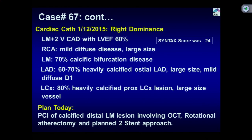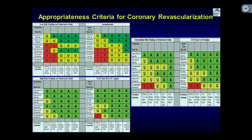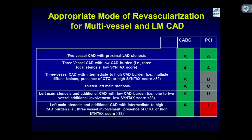We will use OCT, rotational atherectomy, and a planned 2-stent approach. With a syntax score of 24, it is reasonable to have a heart team discussion, which we did. The patient was reluctant for CABG. She had a discussion with the surgeon and elected for PCI. This fits into the ACC guideline class just above class 3 — left main stenosis with additional CAD with low CAD burden defined as syntax score less than 33. PCI is inappropriate only for patients with high syntax burden and left main disease who are low surgical risk.